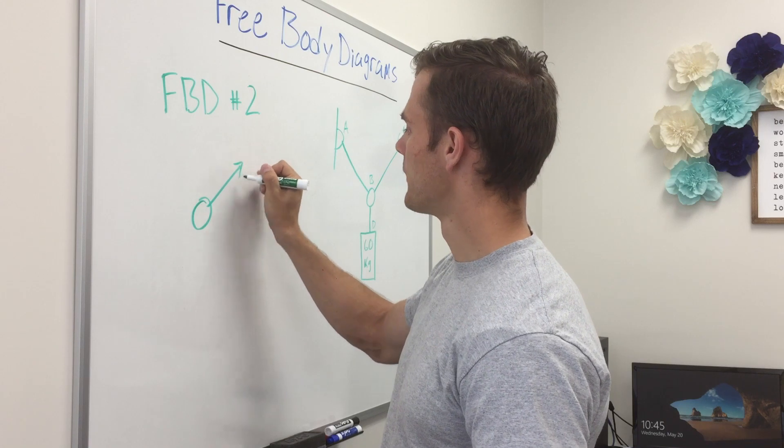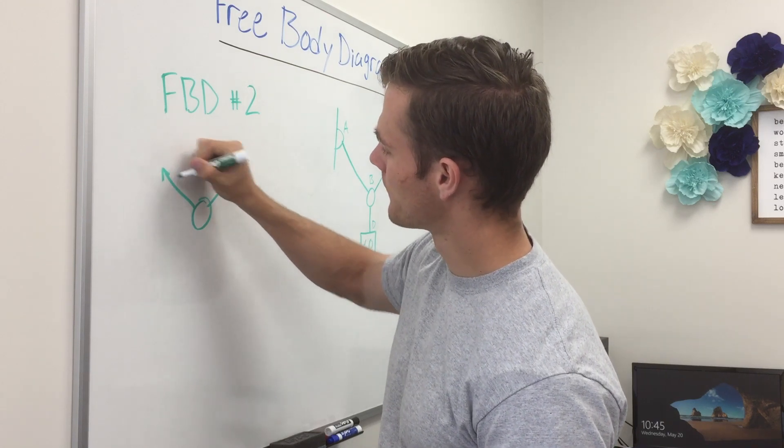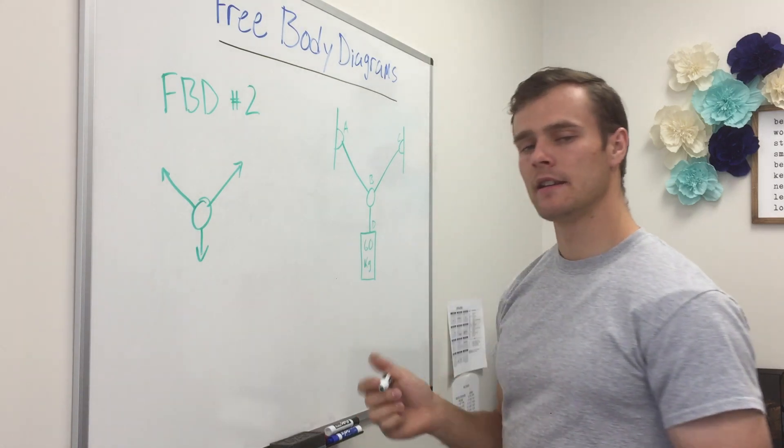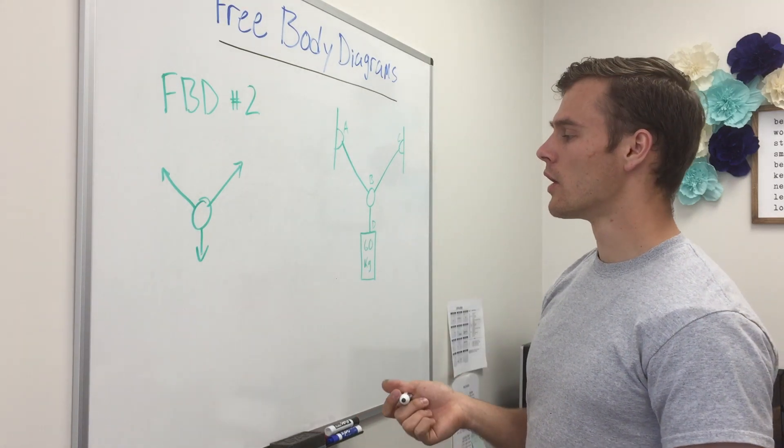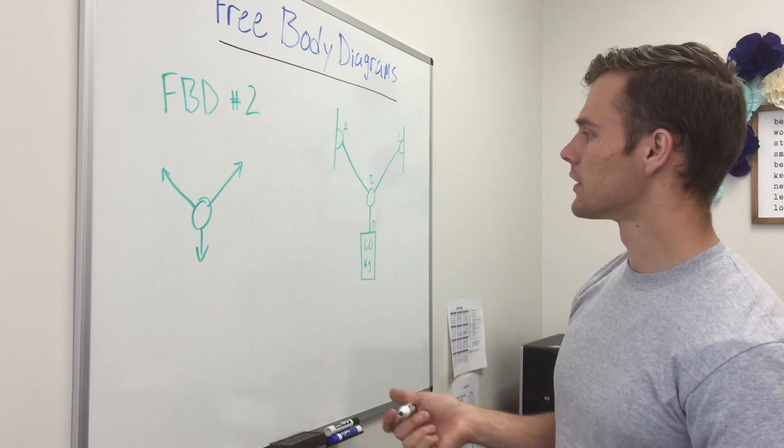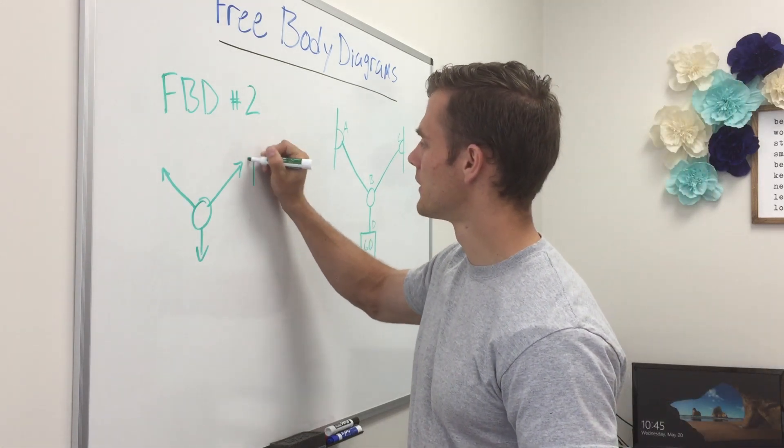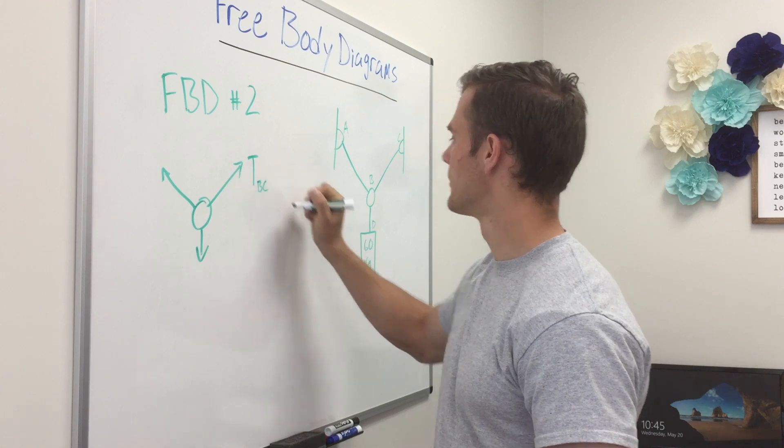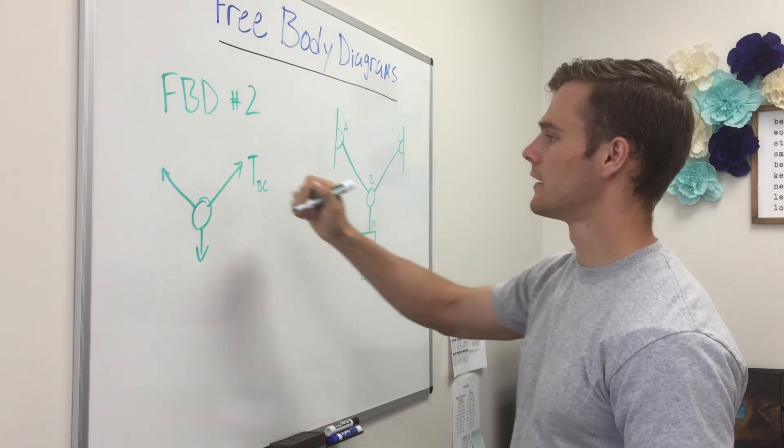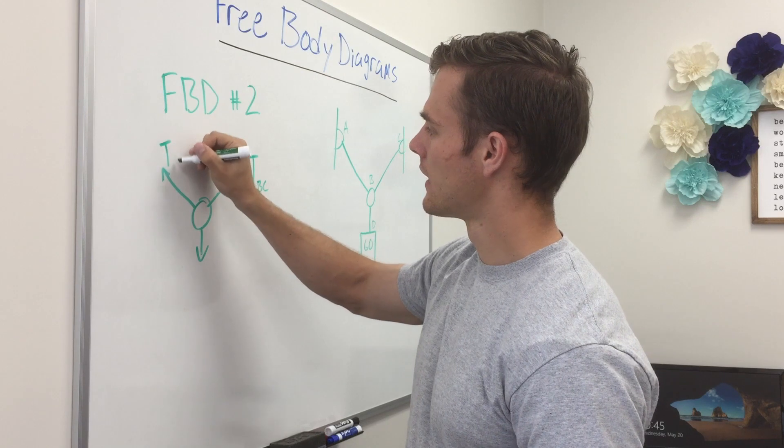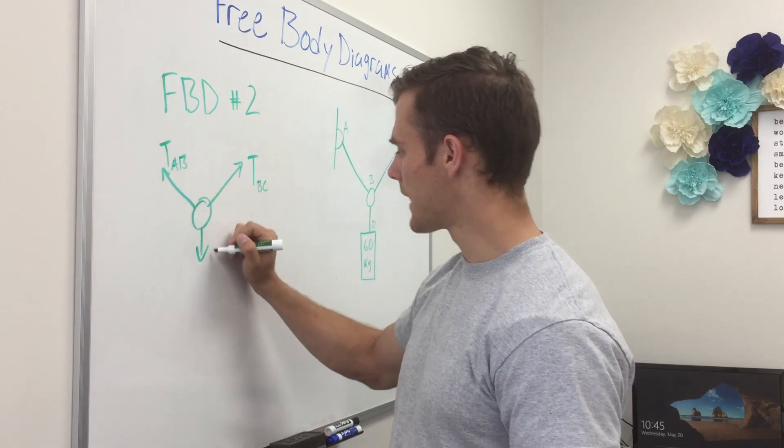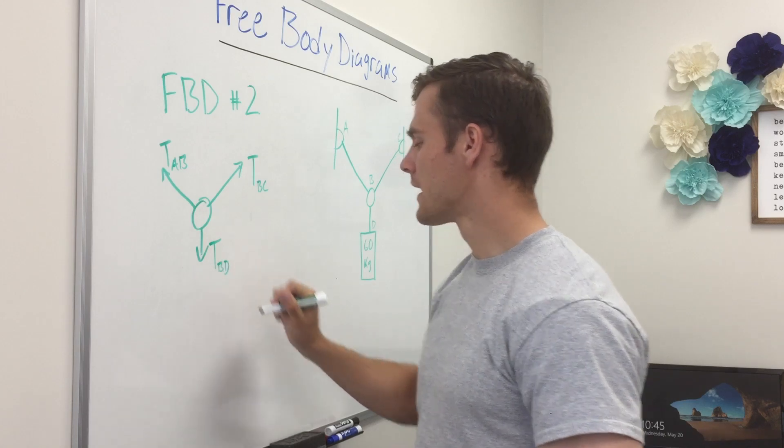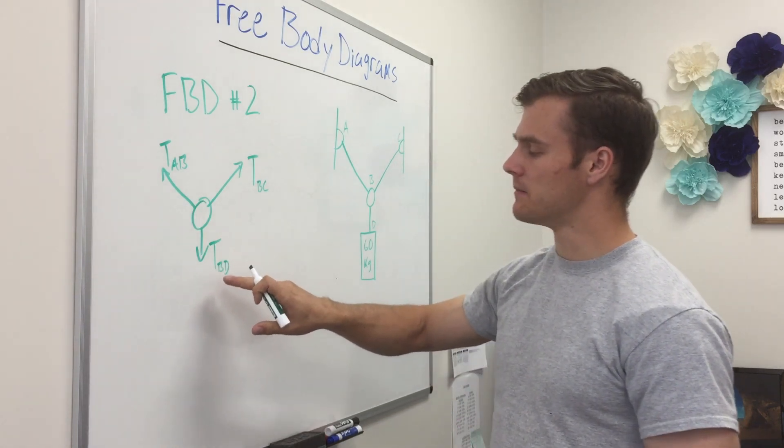We'll draw the ring here and the ropes coming off of it like that. And in this case we don't really know what the forces are so we'll just have to label them. Label this tension as tension BC because it's going from B to C, and this tension as AB and this tension as BD.